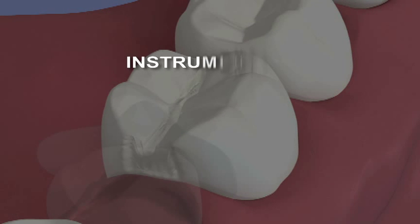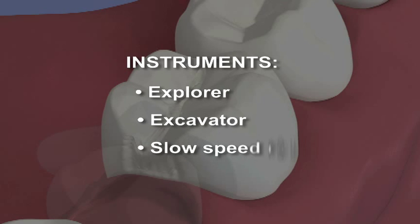When the preparation is completed, proceed with checking for softness in the structure. Use any of the following instruments: an explorer, excavator, or a slow speed round burr, based on your preference.